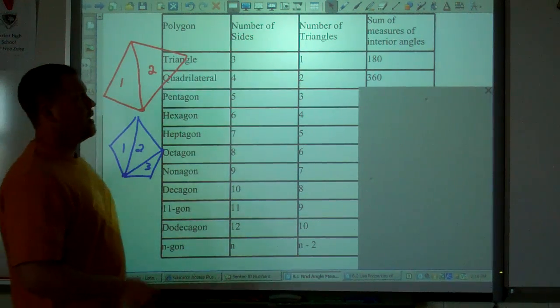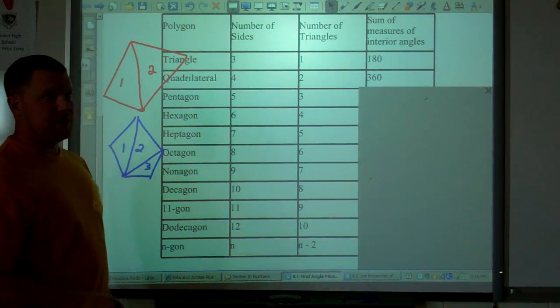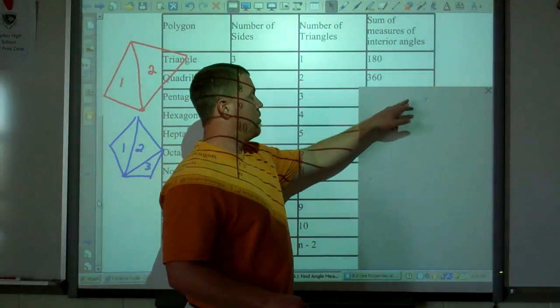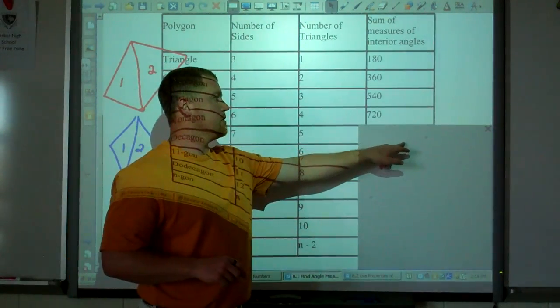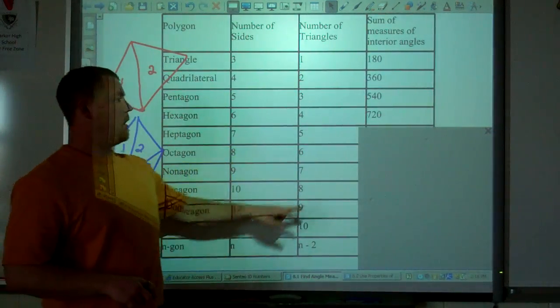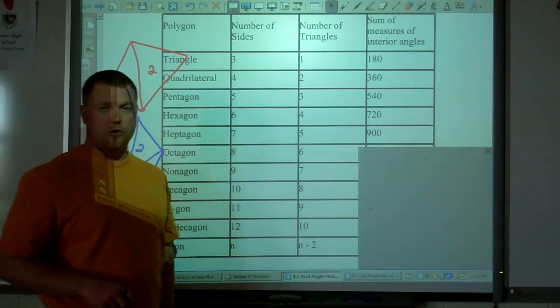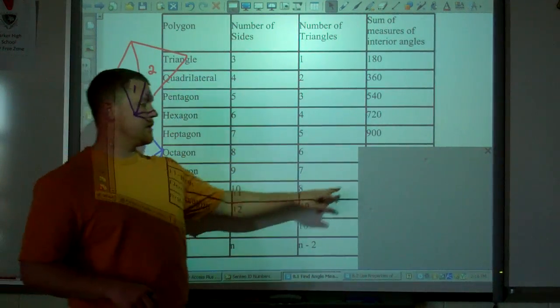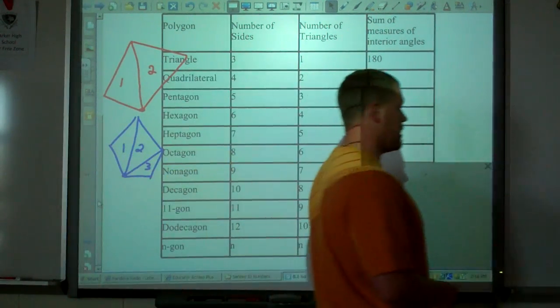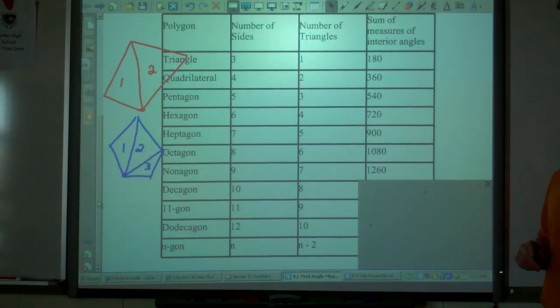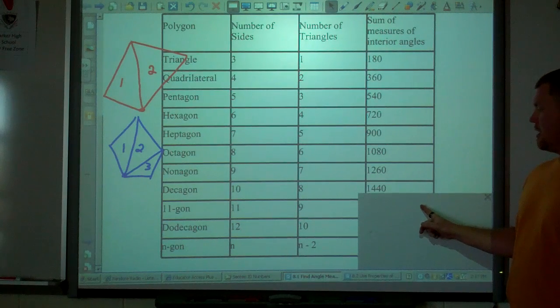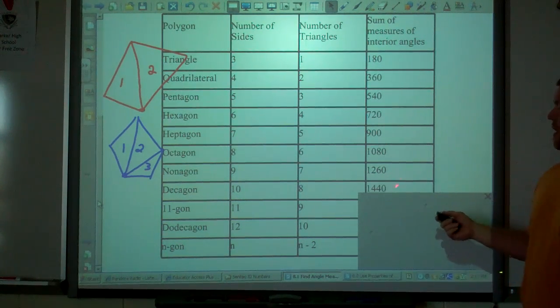Now, the sum of the interior angle measures: 180, 360, 540 for a pentagon. Hexagon, 720. A heptagon, 900. An octagon, 1080. For a nonagon, 1260. Decagon, 1440.